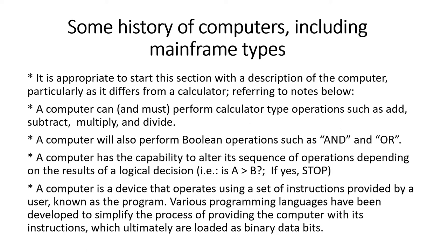In this section I want to give a little bit of history about computers, which at this point include mainframe types. A computer is a calculator and then some — it must perform calculator-type operations such as add, subtract, multiply, and divide. In addition, the computer can perform boolean logic operations such as AND and OR in a bitwise fashion, including maybe eight bits or even today's 64 bits at a time.